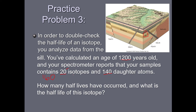There's a rhythm to these problems. First, remember all your daughters used to be parents — add them together: 20 plus 140 is 160 initial parents, with 20 remaining today. We need to figure out how many times 160 has been halved to get to 20. First half-life: 80 parents remain, 80 turn to daughters. Second half-life: 40 parents remain, 40 turn to daughters. Third half-life: 20 parents remain, 20 turn to daughters. Now we're at 20 parents.